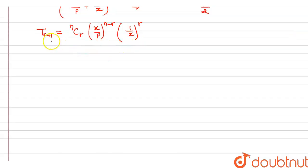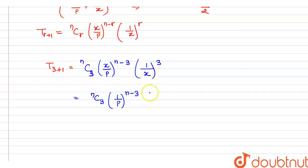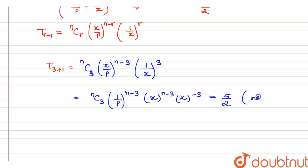Since the fourth term equals 5/2 and is independent of x, the power of x must be zero: (n - 3) - 3 = 0, giving n = 6. Substituting n = 6, the term becomes: 6C3 · (1/p)^{6-3} = 5/2, which is 6C3 · (1/p)³ = 5/2.